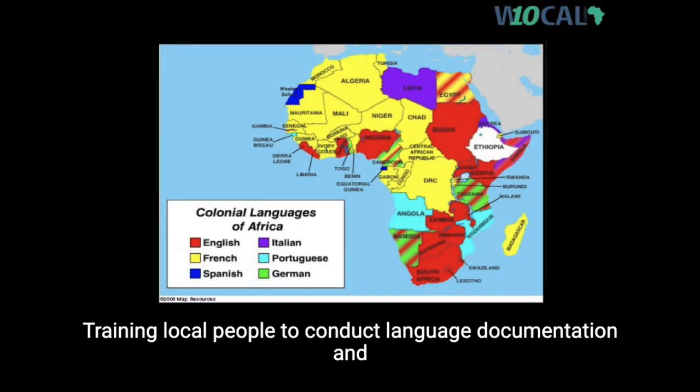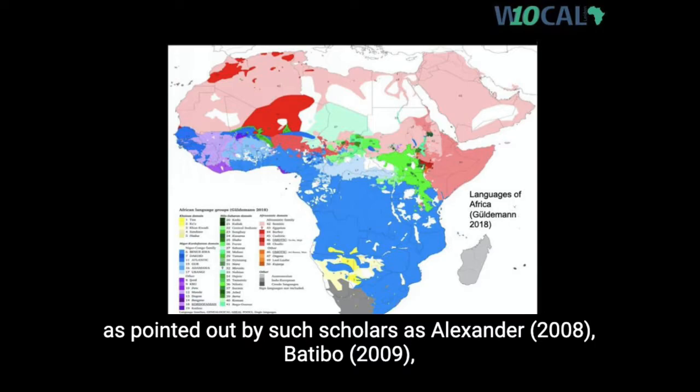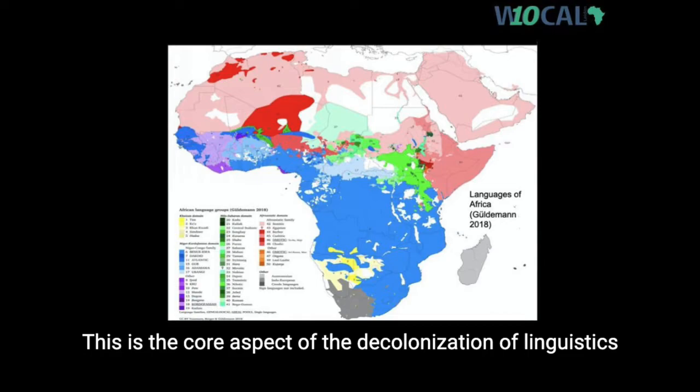Training local people to conduct language documentation and revitalization work and build dictionaries for their own communities is a core long-term aspect of our approach. As pointed out by scholars such as Alexander 2008, Batibo 2009, Ajukum 2018, and Prinslow 2019, this is a core aspect of the decolonization of linguistics in the African context.